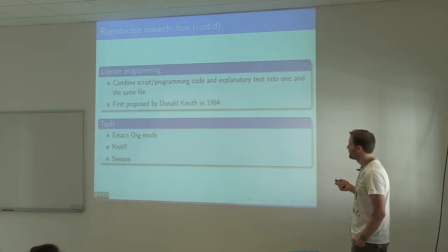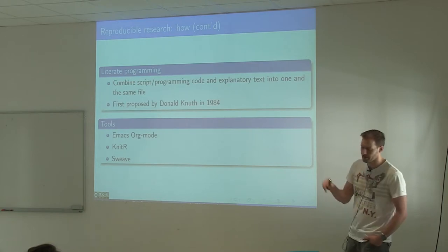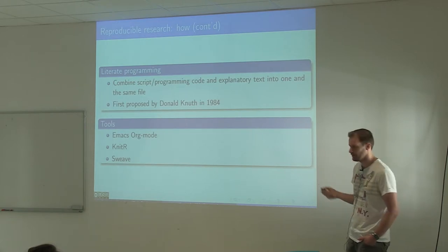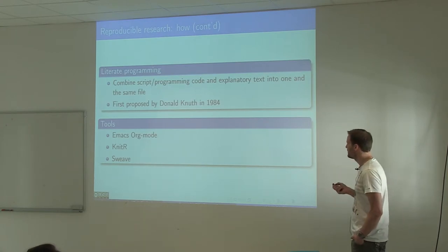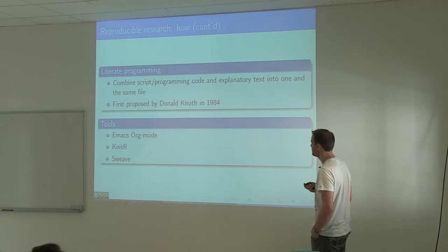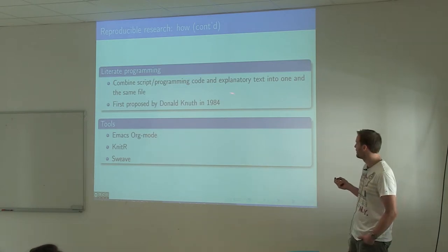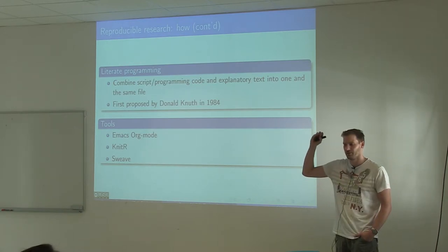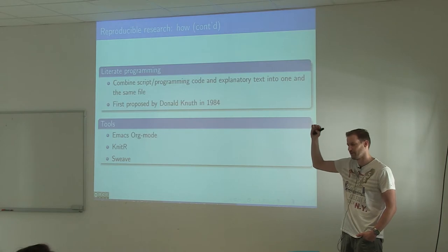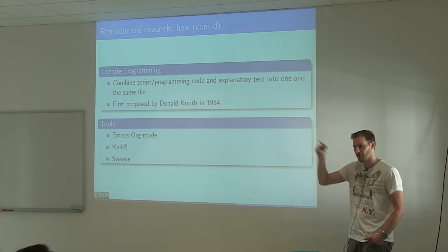One of the people to first really think about how you should do scripting, programming, and explanation of what your program is supposed to do was this guy Donald Knuth. He wrote quite a few books on algorithms but also a book about what he called literate programming, where he explains that you should, if you write a script or a program, start explaining it in human language and then put the code in between.